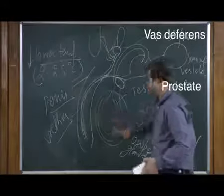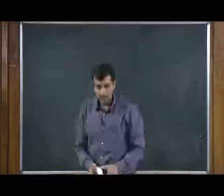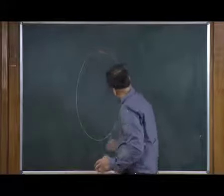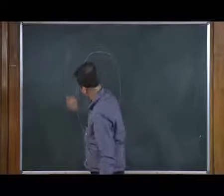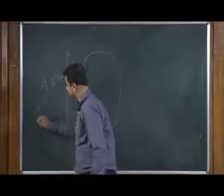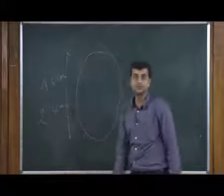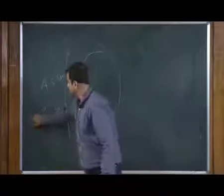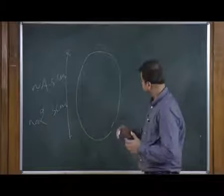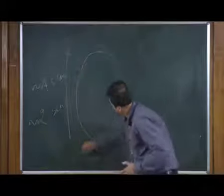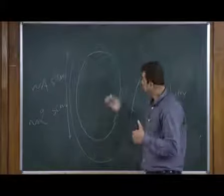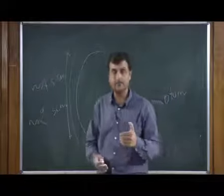Let us discuss about the testes. The testes is a roughly unique organ. Lengthwise it is approximately 4 to 5 centimeters in length and approximately 2 to 3 centimeters in diameter. These are just approximations. The testes is a very fragile organ and the outer covering is called the scrotum. If we see the testes, there are many compartments actually inside.